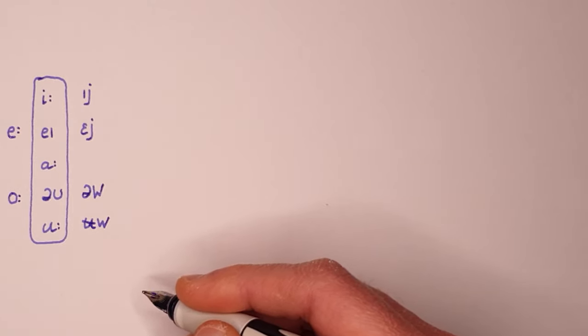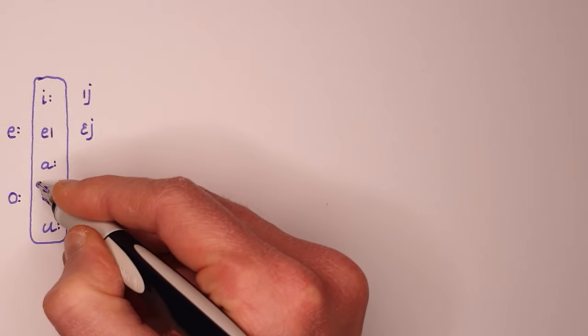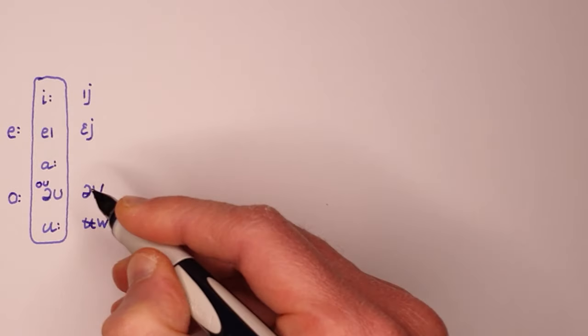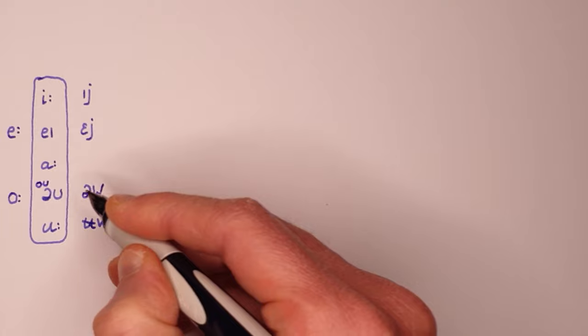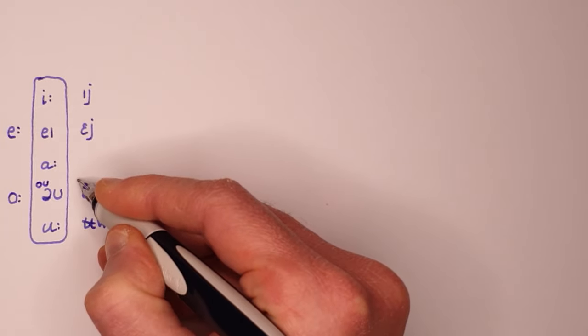For example, the diphthong in goat used to be goat in older RP, almost like northern goat. Its SSB equivalent would be goat.